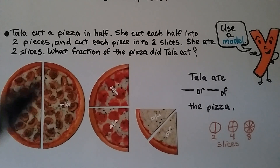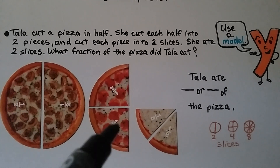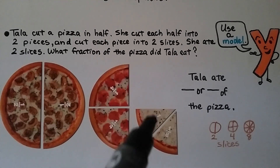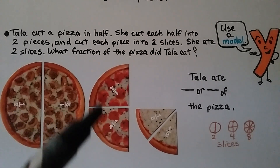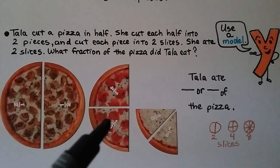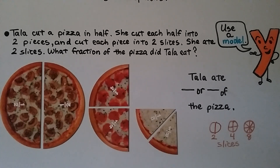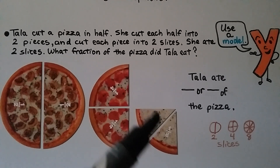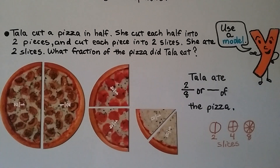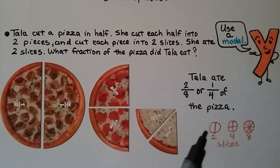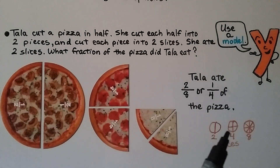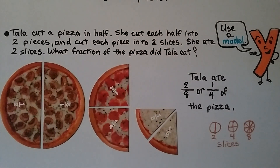Tala cut a pizza in half. She cut each half into two pieces, making fourths. Then she cut each piece into two slices, making eighths. She ate two slices — two-eighths. We can also see that two one-eighth slices is the same amount as one-fourth, so one-fourth is an equivalent fraction for two-eighths.